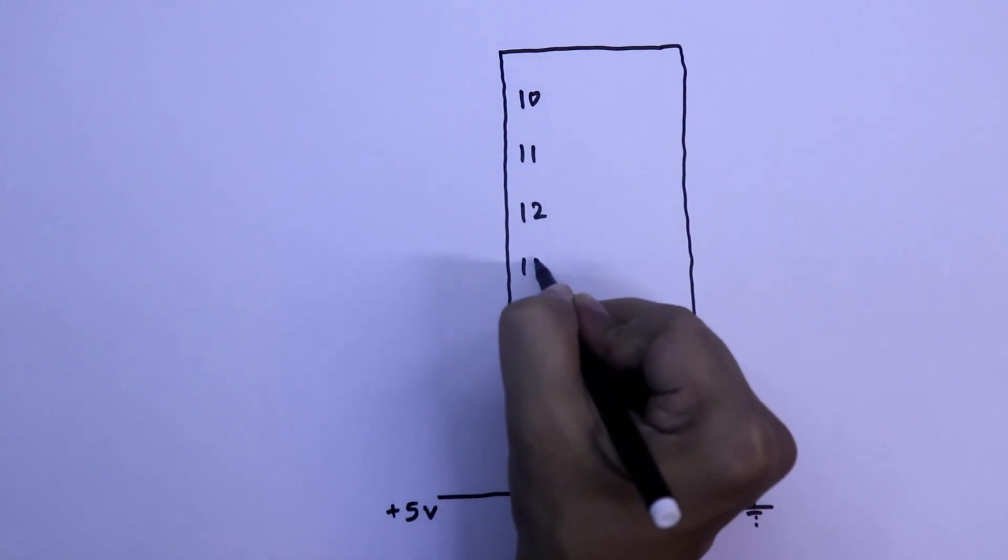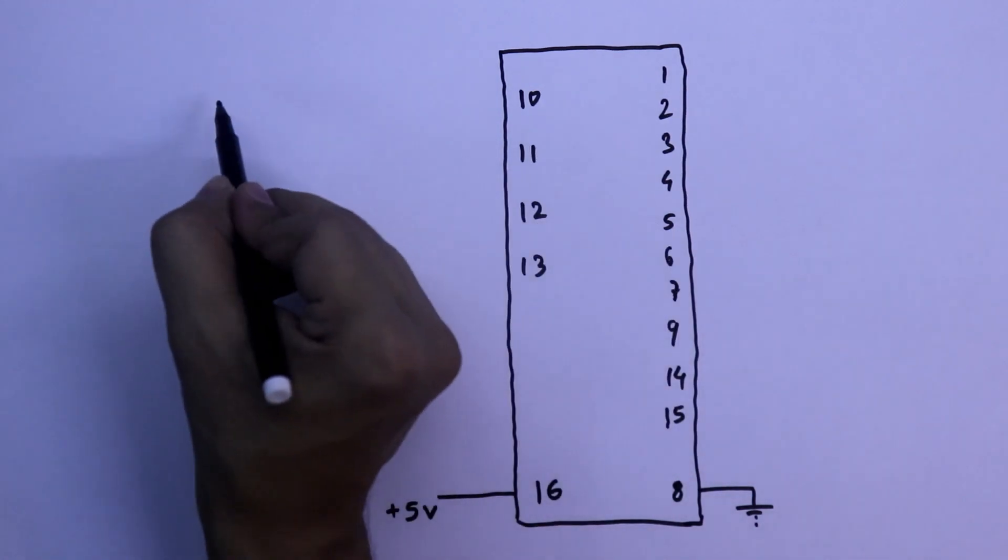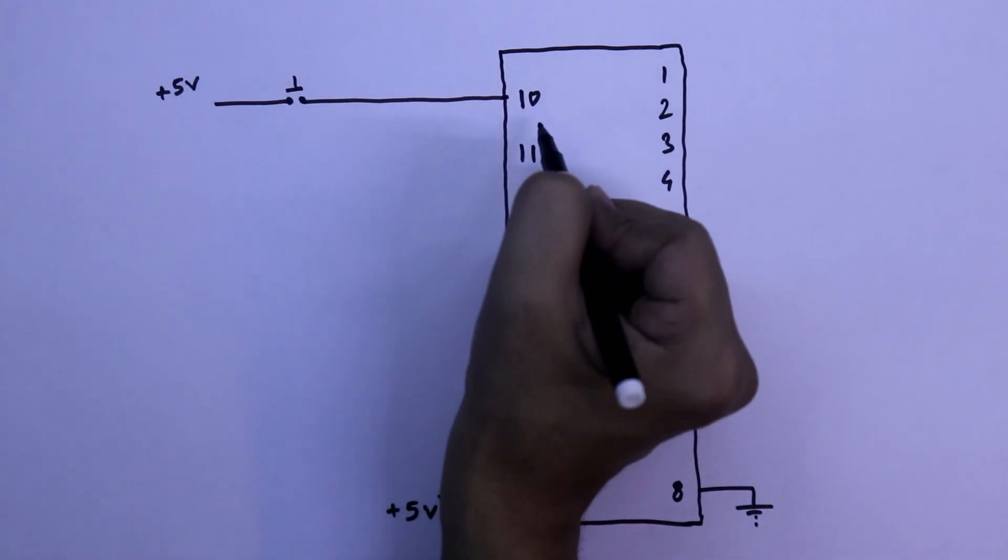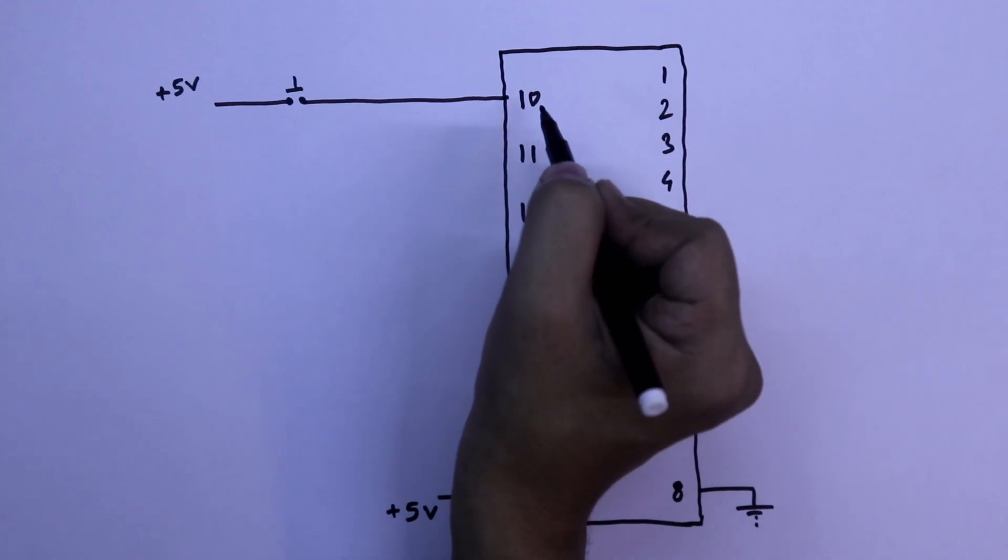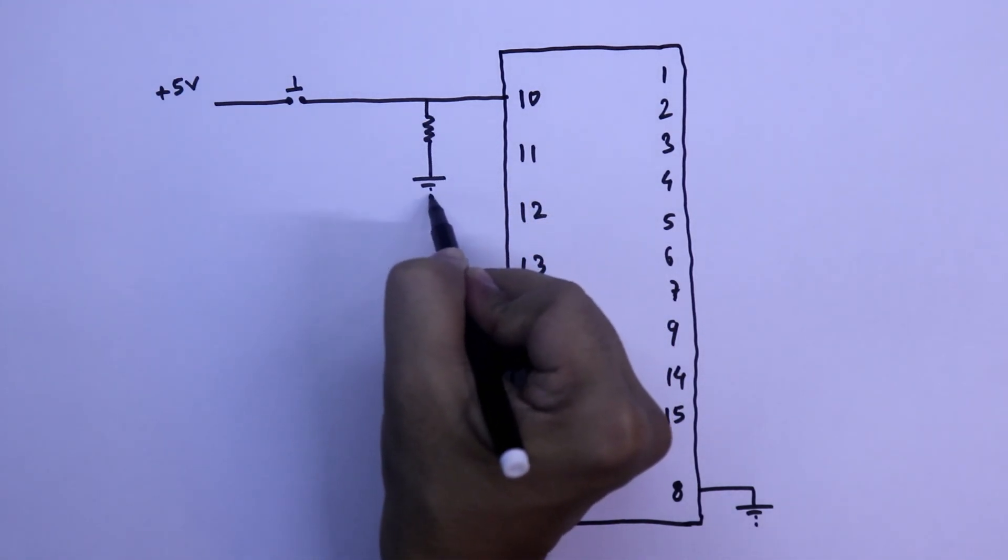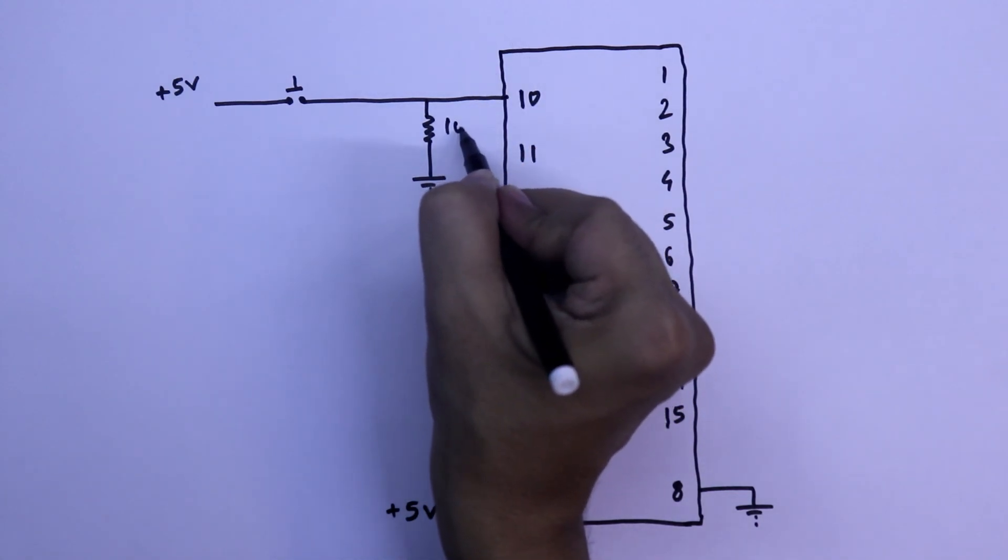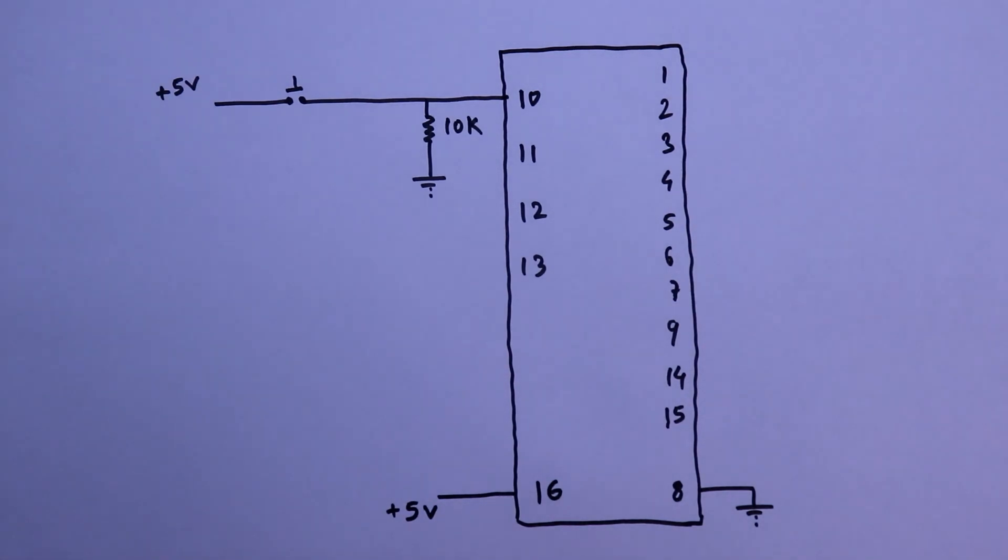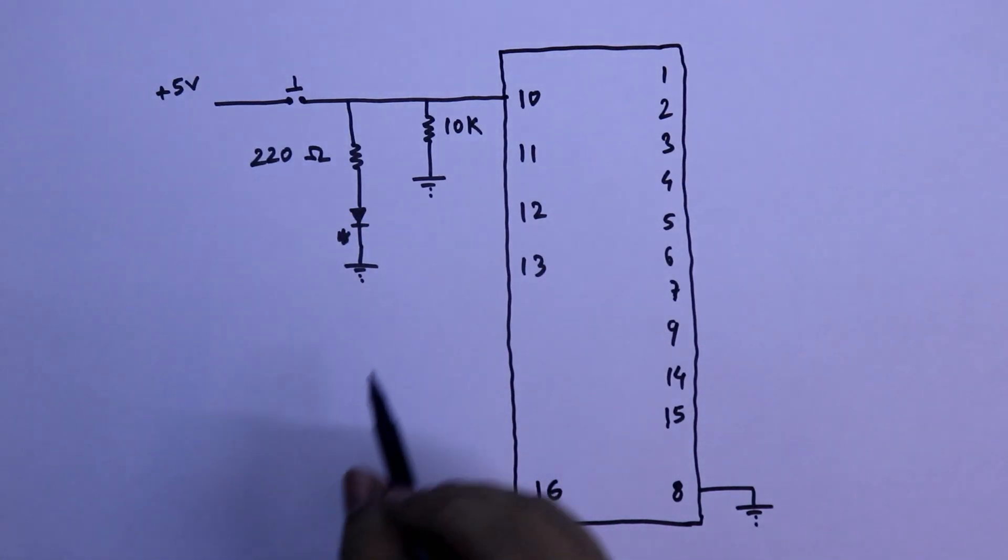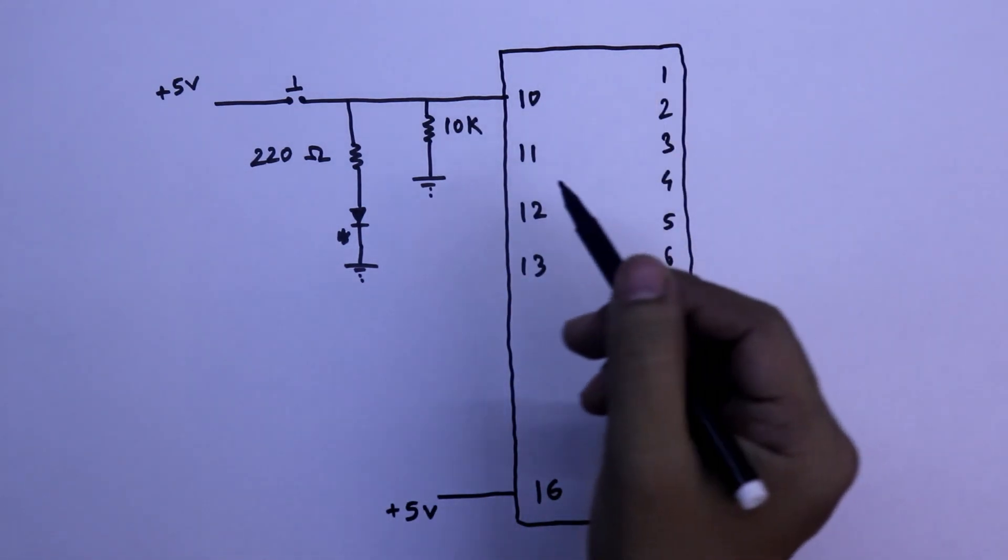IC 4028, pin 8 is ground and pin 16 is plus VCC. I will connect to plus 5 volt. The input pins are 10, 11, 12, 13 and these are the output pins. To provide input, we have to connect a switch. And the other side of the switch is connected to the plus 5 volt. So that whenever we press the switch, this will get the input or high signal.